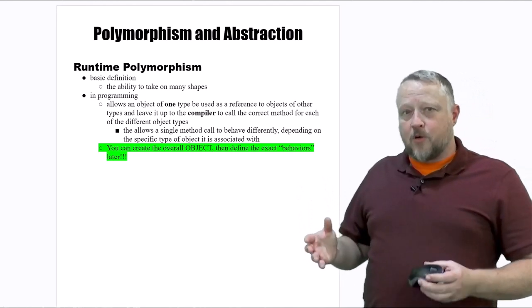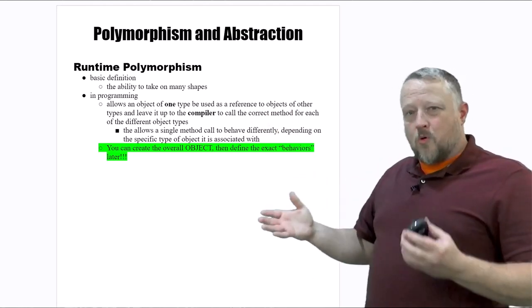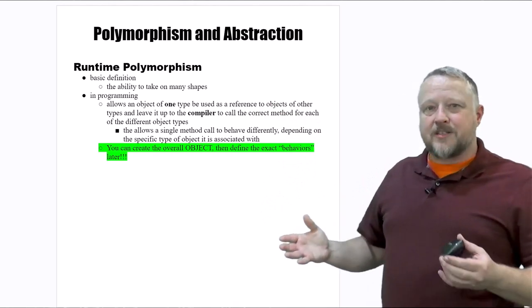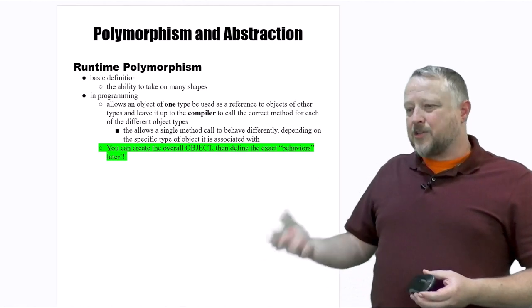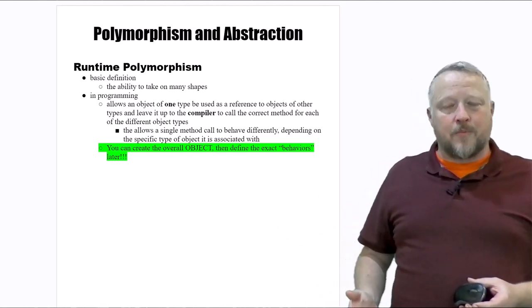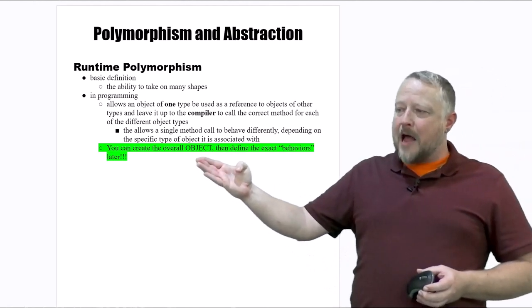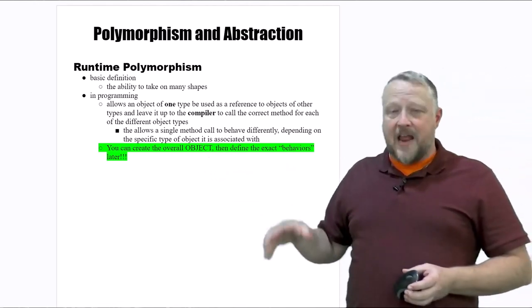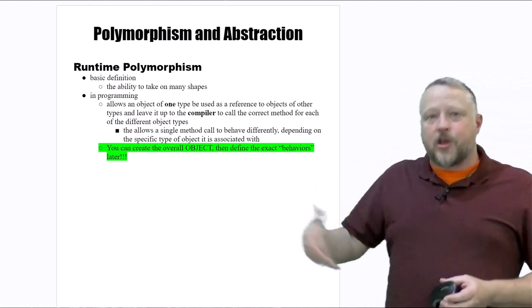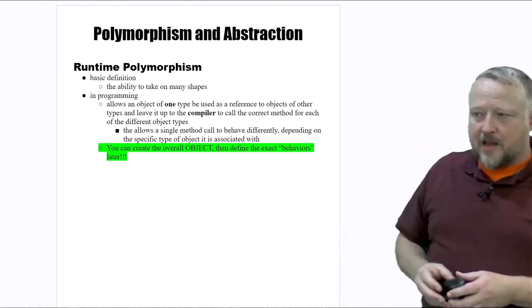How polymorphism is going to work is that when we do inheritance at runtime, we're going to be able to fill in the dots on exactly which of the options you want to not just inherit from but derive from as well. So you can create the overall object and then define the exact behaviors later as the code has progressed. That's where runtime polymorphism comes into play.